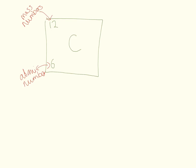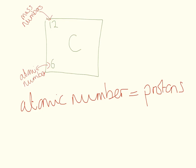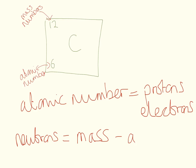Now the atomic number is equal to the number of protons, which is also equal to the number of electrons. We find out the number of neutrons by simply taking the atomic number away from the mass number.